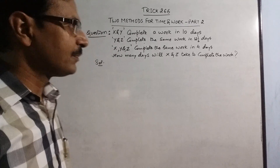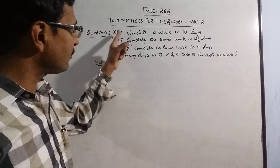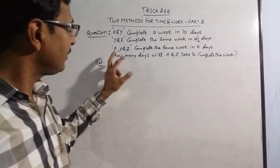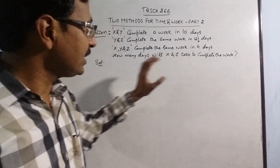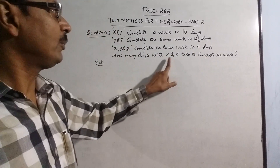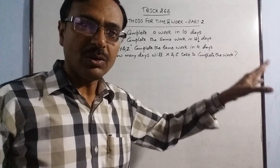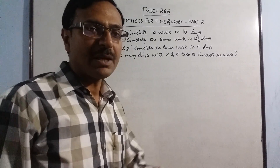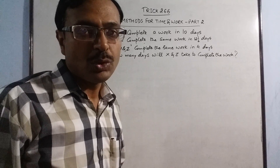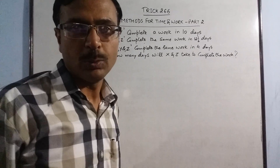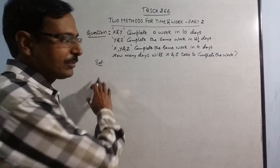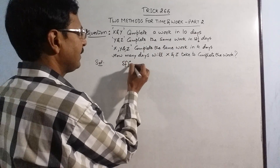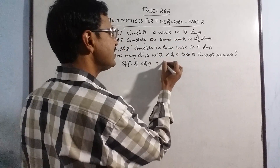Now a more complex problem: there are three persons X, Y, and Z. When X and Y work together they complete the work in 10 days. When Y and Z work together they complete it in 12 and a half days. When all three work together they complete the work in 4 days. We need to find how many days X and Z take to complete the work together. Two pairs and the full trio are given; we need the third pair. This is a special type of problem common in competitive exams.